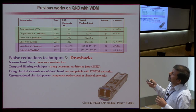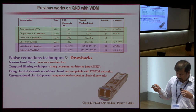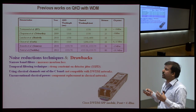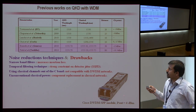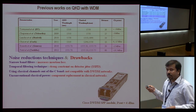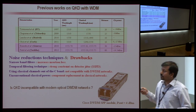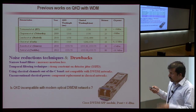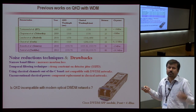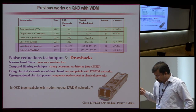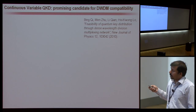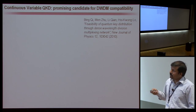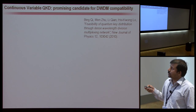This picture shows a DWDM transceiver normally used in a classical network — it's from Cisco and generates a power of 4 dBm. So with such power, can we do real QKD in a modern DWDM network? That's an open question. Continuous variable QKD is a promising candidate in such a situation.